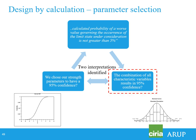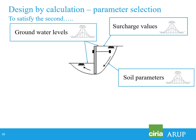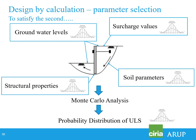Through the Project Steering Group and discussions with the code drafters, we agreed it was definitely the former interpretation. But that raises the question of how to achieve 95% confidence across all characteristic variables in a retaining wall. The answer is that you'd need characteristic distributions of water levels, surcharge values, soil parameters, structural properties — everything — in a Monte Carlo analysis, then have a probability distribution of the ULS occurring and confirm 95% confidence. This is an interesting area for research, but not particularly relevant for day-to-day practice. Statistics probably don't have a role in routine design unless you have a huge amount of data.